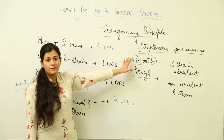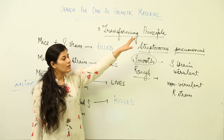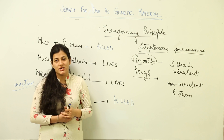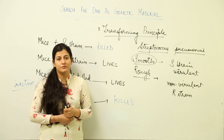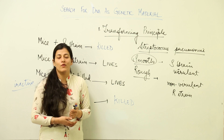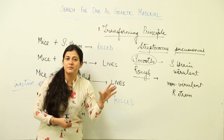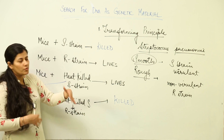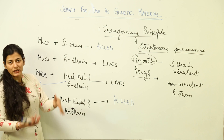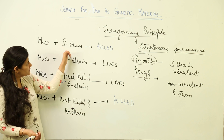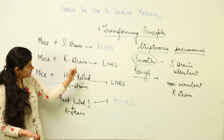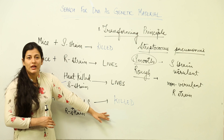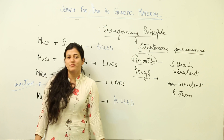This is what Frederick Griffith proposed in 1928. The transforming principle experiment is quite famous in genetic studies for establishing the role of DNA. To summarize: one strain kills, the other does not; when the killing strain is disabled but brought into contact with the non-killing strain, it still causes death — and that has been brought about by the transforming principle.